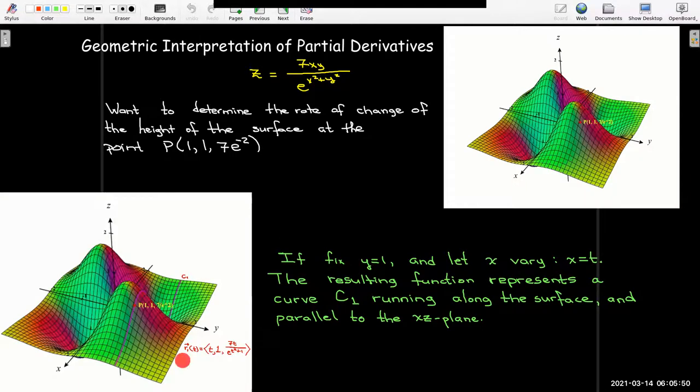And in fact, it's not hard to figure out what the parametric representation would be for that curve. We know that y is fixed to be 1, x is our parameter t. And so then if I just put y equals 1 and x equals t into the formula for z, then I've got my parameterization for that particular curve.